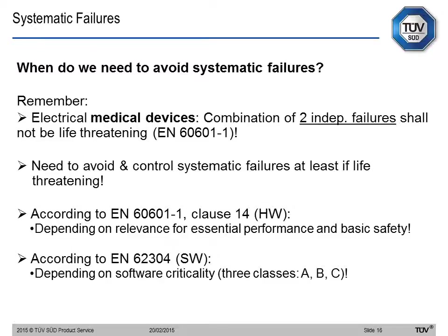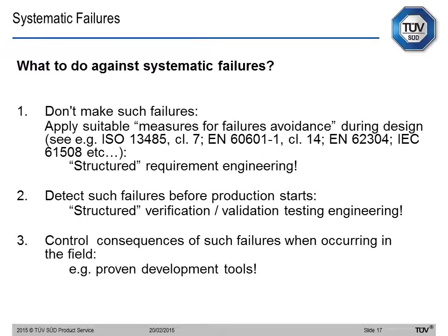What to do against systematic failures? First, have good measures for failure avoidance, such as design and structural requirement engineering. You can also detect failures before production starts with a very good verification and validation process. If that is not yet enough, you have to control the consequences of such failures when they occur in the field. The important thing is to start at the design phase and not look retrospectively — this is also more cost-effective.